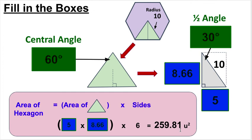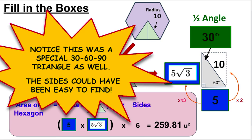The general process: find your central angle, chop it in half, find the two blue sides, multiply them together, then multiply by the number of sides. As a bonus note — this was a 30-60-90 triangle. The shortest side is always half the hypotenuse, so with radius 10, the short side is 5. Multiply 5 by the square root of 3 for the other side, then times 5 again for the wedge area, times 6, and you also get 259.81 units squared.